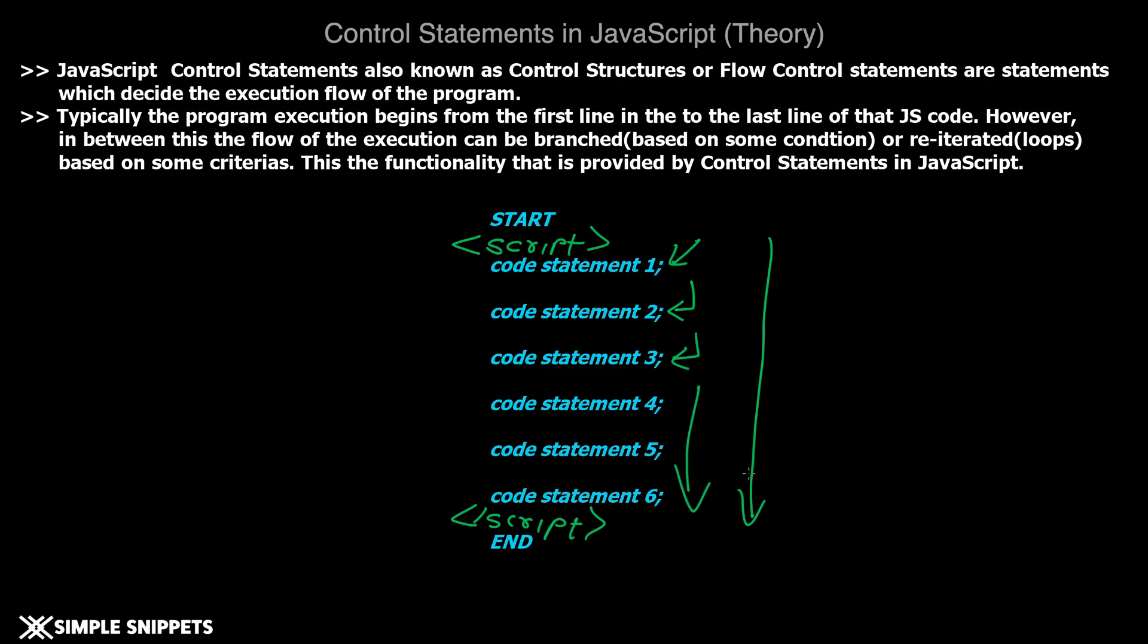However, in real-time or real-world scenarios, this entire flow is not as simple as in this case. It is not going to be like a linear way in which the code flows in one direction. This is where control statements come into picture, and they basically govern how the flow of the program is going to be and how the code statements are executed one after another.